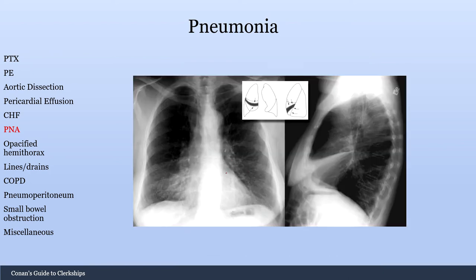One last example — there's a density on the frontal X-ray. On the lateral X-ray you can see a density here, which makes this a right middle lobe pneumonia, as illustrated by the different lobes.